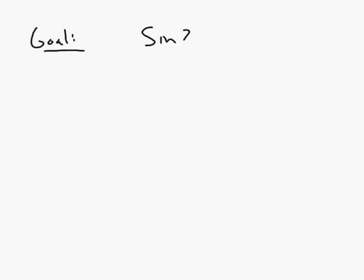We're going to continue using a circle at least one more time, and derive one more fun identity that you've seen before in the past, and you may not have known where it came from. So my goal here is to get an expression for the sine of 2 theta. Sometimes in earlier courses, you're shown what this equals — you have a formula sheet, but where does it come from?